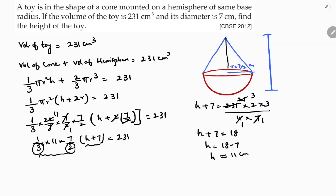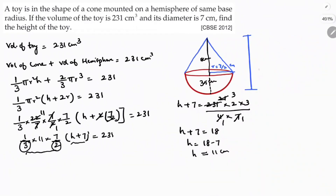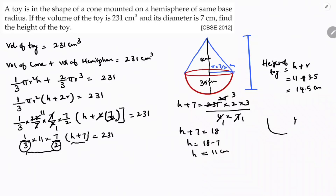The height of the cone is 11 centimeters. The radius is 7 by 2, which is 3.5 centimeters. The height of the toy is height of cone plus radius of hemisphere: 11 plus 3.5 equals 14.5 centimeters. So the total height of the toy is 14.5 centimeters.